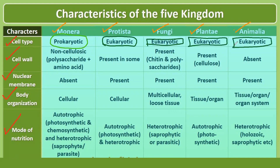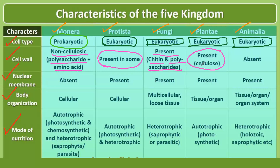Protista, Fungi, Plantae and Animalia have well-developed nuclear systems. Regarding cell wall: Monera has a non-cellulosic cell wall composed of polysaccharides and amino acids. Certain Protista also have a cell wall. Fungi have a cell wall made of chitin and polysaccharides. Plantae have a cellulosic cell wall. Animalia have no cell wall. Apart from Animalia, all kingdoms have cell walls, but the composition differs.